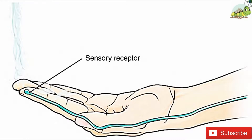Found in the skin of your fingers or toes is a type of sensory receptor that is sensitive to temperature, called a thermoreceptor. When you place your hand under the shower, the cell membrane of the thermoreceptor changes its electrical state — that is, its voltage. The amount of change is dependent on the strength of the stimulus, such as how hot the water is. This is called a graded potential.